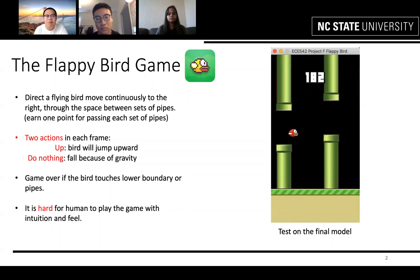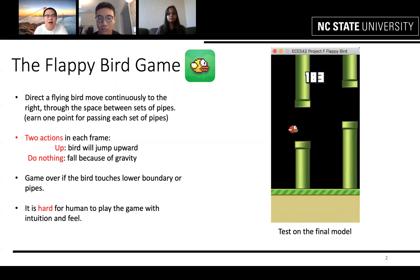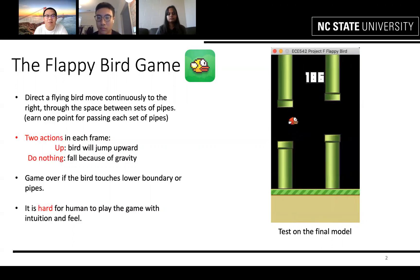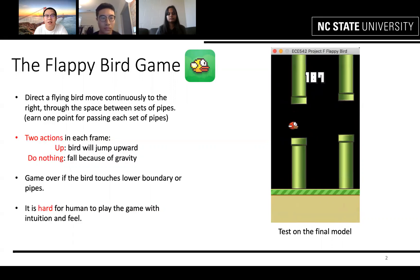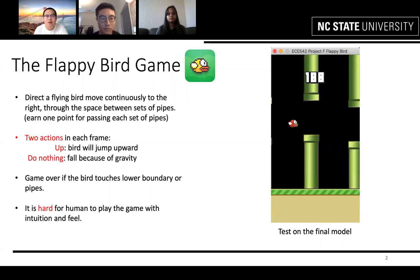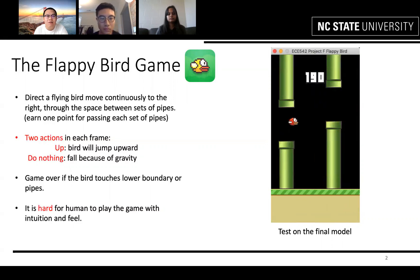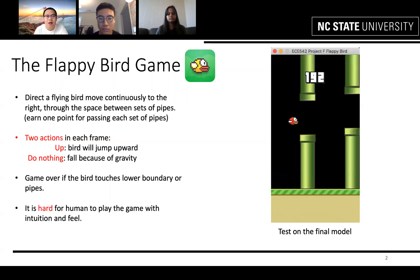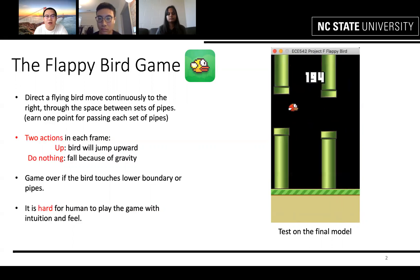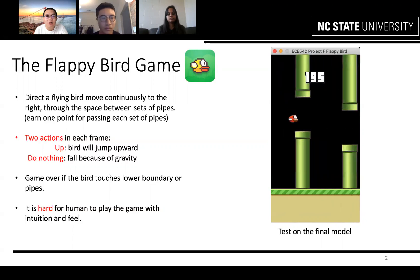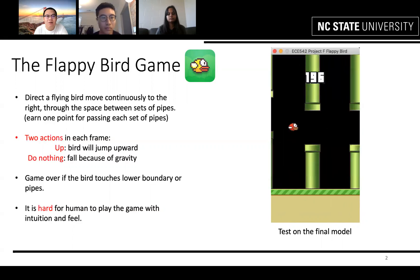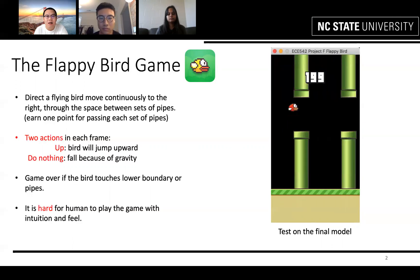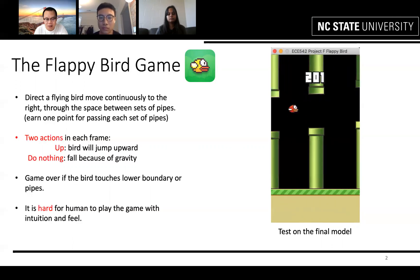At each instance, if the player presses up, the bird will jump upward; otherwise, if the player does nothing, the bird will fall because of gravity. The game is over if the bird touches the lower boundary or the pipes. It's hard for a human to play the game, and our group tried many times with the highest score being quite limited.